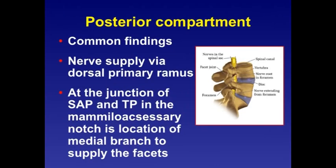In the posterior compartment, common findings include nerve supply via the dorsal primary ramus. At the junction of the SAP and TP, the medial branch is located — it supplies the facet joints and another branch extends into the lateral parts of the paraspinal area.